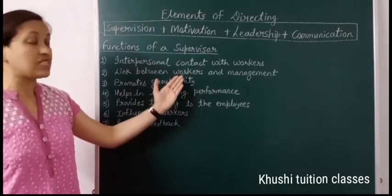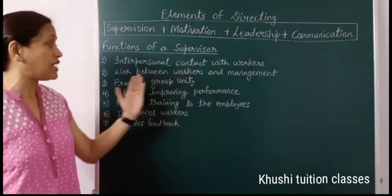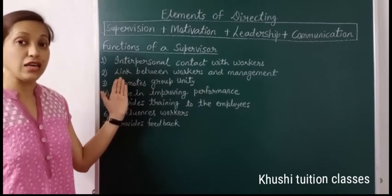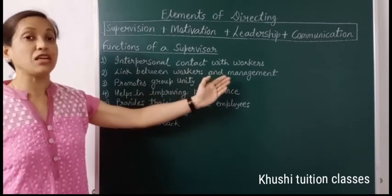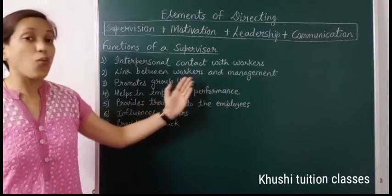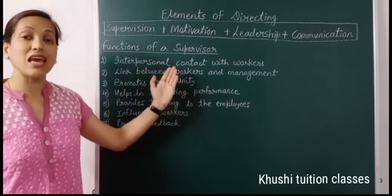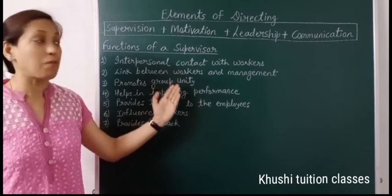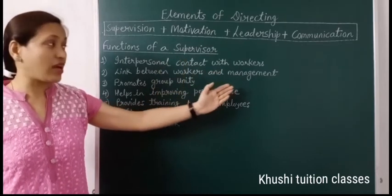Second is link between workers and management. Supervisor अपनी team, workers और management के बीच में intermediary होता है, link होता है. यह supervisor management की policies, program, strategy workers को convey करता है, और workers के ideas, suggestions, grievances, complaints management तब convey करता है.